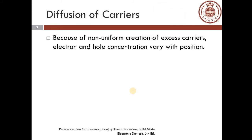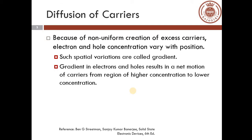In module 1, we learned about the generation of excess charge carriers in a semiconductor. When these charge carriers are created non-uniformly in a semiconductor material, the concentration of electrons and holes varies with position. This concentration variation with position is called a gradient, and this concentration gradient causes a motion of charge carriers from regions of higher concentration to regions of lower concentration. This type of motion is called diffusion.